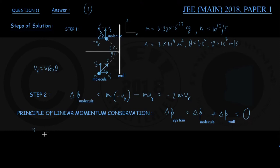This must be equal to 0 in the absence of an external force acting on the system. So it follows therefore that during each collision, the change in momentum of the wall is equal to negative of the change in momentum of the molecule.